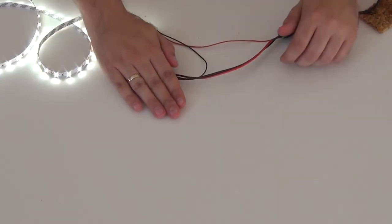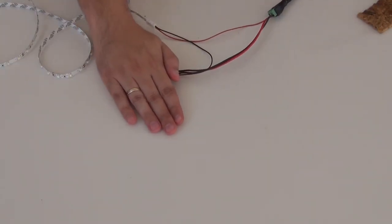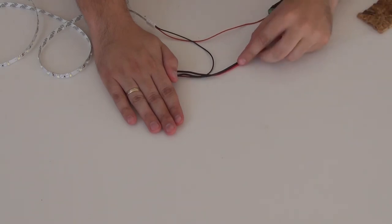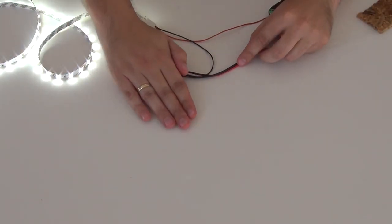Covering the controller makes the LED strip go off since the controller thinks that the drawer is closed. And uncovering the controller makes the LED strip light up.